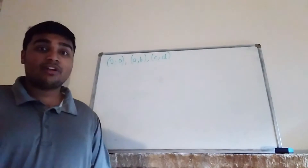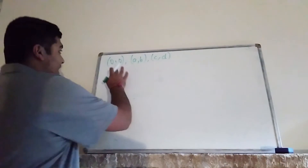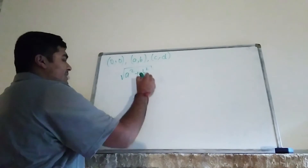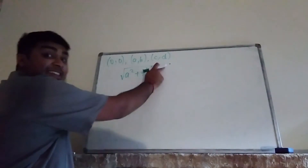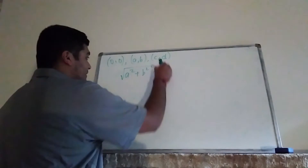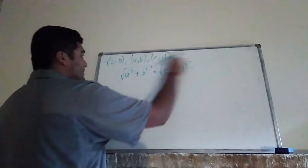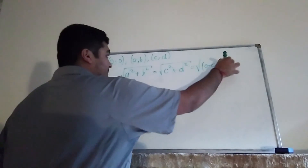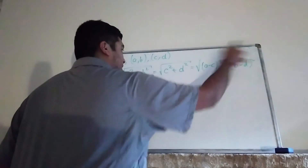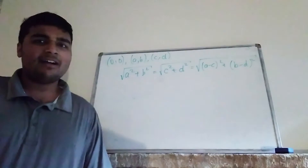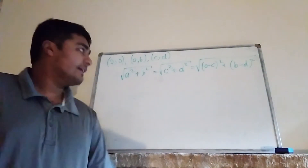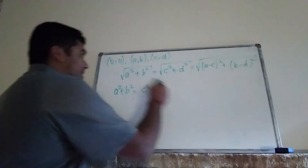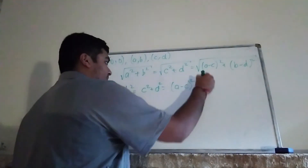Since it's an equilateral triangle, each of the lengths are the same. The distance between (0,0) and (a,b) is √(a²+b²) by Pythagoras' theorem. The distance between (0,0) and (c,d) is √(c²+d²). And the distance between (a,b) and (c,d) is √((a−c)²+(b−d)²). We have a lot of square roots, so let's square everything: a²+b² = c²+d² = (a−c)²+(b−d)².